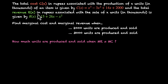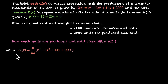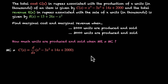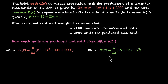Marginal cost, for example, can be calculated by differentiating the cost function. So marginal cost C'(x) is the differentiation with respect to x of x³ - 3x² + 14x + 2000. Similarly, marginal revenue R'(x) is the differentiation of the total revenue function: d/dx of (15 + 26x - x²).